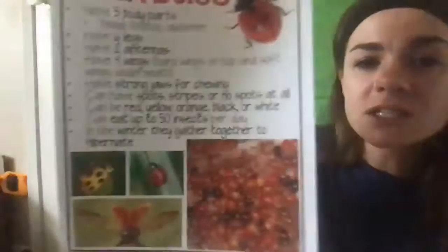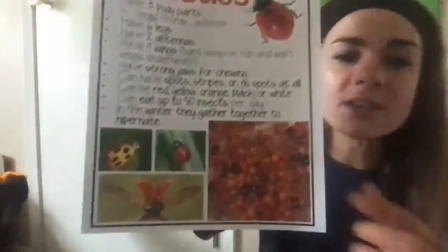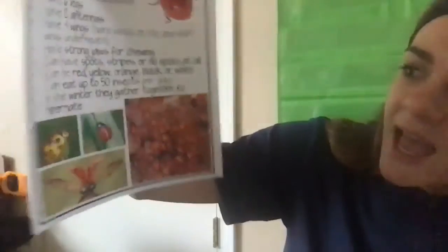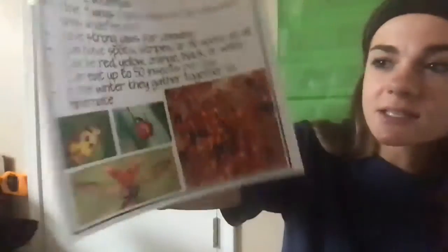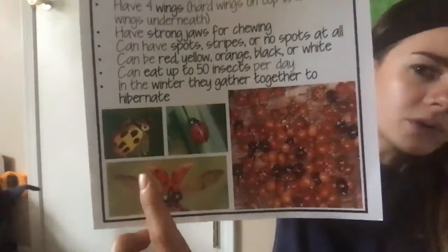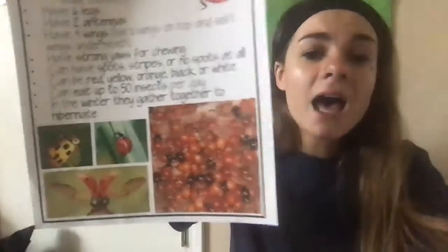Ladybugs have strong jaws for chewing. They can have spots, stripes, or no spots at all — sometimes they look different. They can be all kinds of different colors: red, yellow, orange, black, or white. In the winter, they gather to hibernate — look how many are together, all gathered to hibernate. They have four wings. They eat up to 50 insects per day, so they eat a lot.